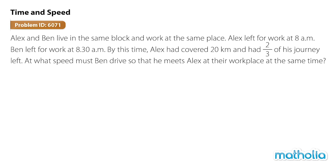Alex and Ben live in the same block and work at the same place. Alex left for work at 8am. Ben left for work at 8:30am. By this time, Alex had covered 20 kilometres and had two-thirds of his journey left. At what speed must Ben drive so that he meets Alex at their workplace at the same time?